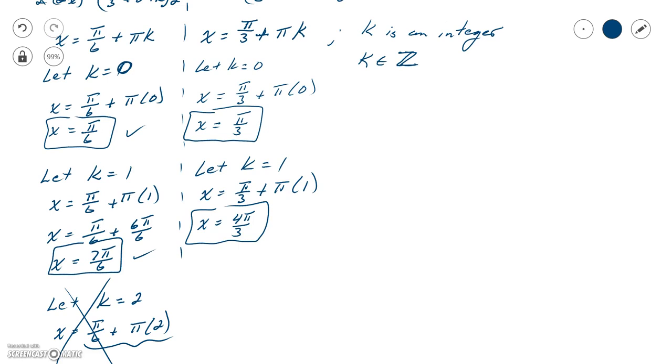If I let k equal 2, just like we had before, what's going to happen is x is going to equal π over 3 plus π times 2, plus 2π. Well, we can see that that's going to be greater than 2π. In that case, I don't need it because I'm specifically looking for answers that are between 0 and 2π.